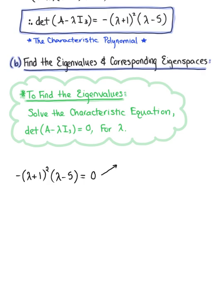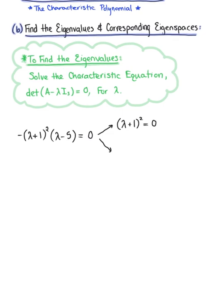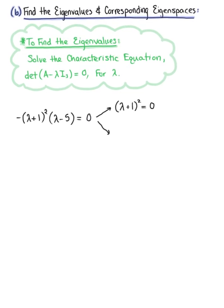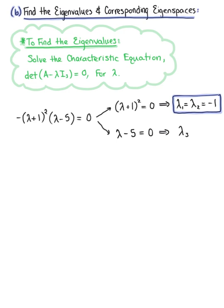We want to be careful with the zero factor property. We have (lambda+1)^2 = 0 — because this factor appears two times, we have two resulting eigenvalues: lambda sub 1 equals lambda sub 2 equals negative 1. Then in case 2, lambda minus 5 equals 0, which produces the third eigenvalue lambda sub 3 equal to positive 5.